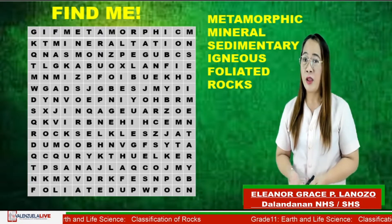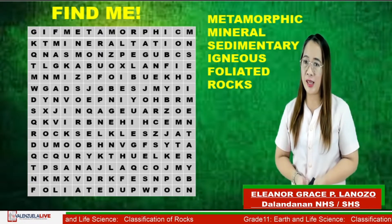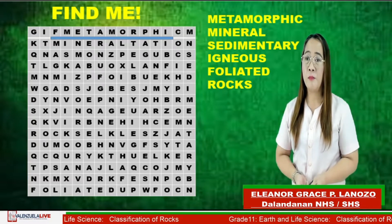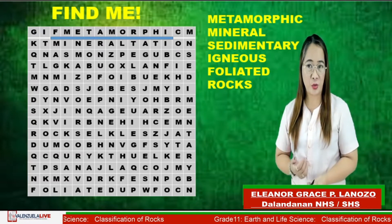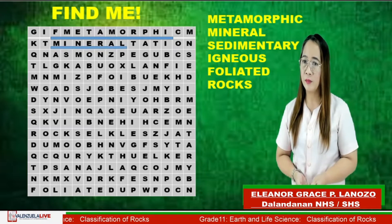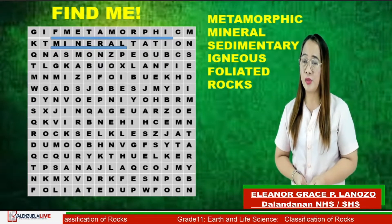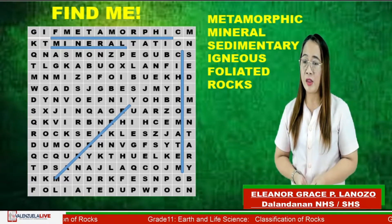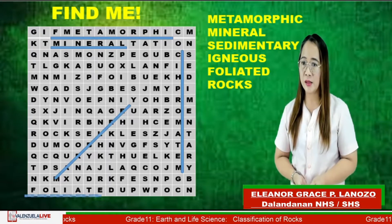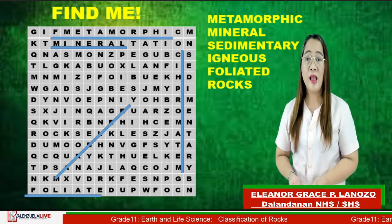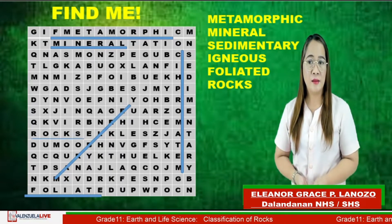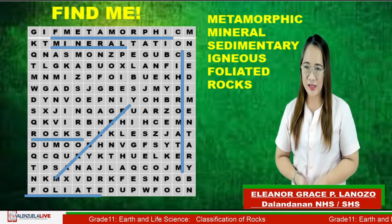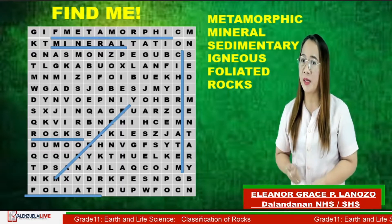Time's up. The first word is metamorphic. Very good, that's great. Second one, minerals. The third one, sedimentary. The fourth one is igneous. Next, foliated. And lastly, rocks. Thank you so much for your participation.